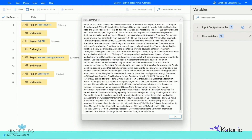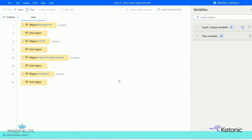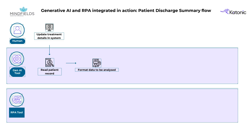Observe the PDF data on the screen as the bot displays a pop-up message. The data from the PDF input is then sent to Gen AI to retrieve the required information for the discharge summary report. We can see here that the patient's information has been updated and the Gen AI tool has read the patient's record and the format has been analyzed. With that, we complete the first two steps.